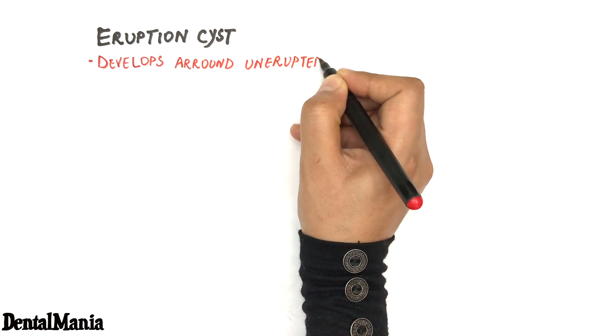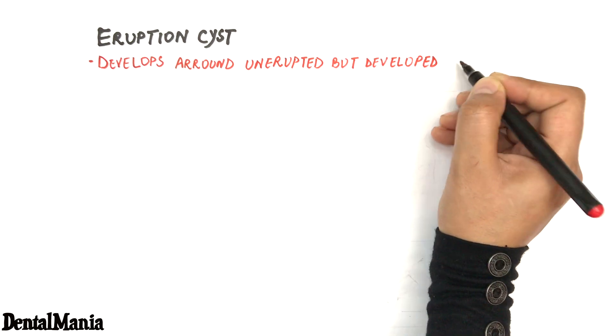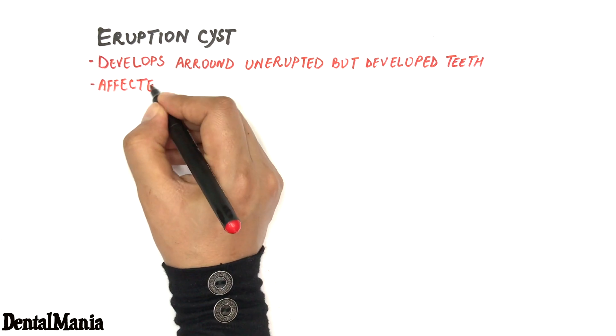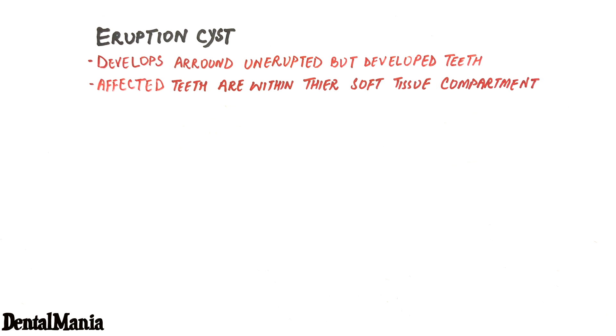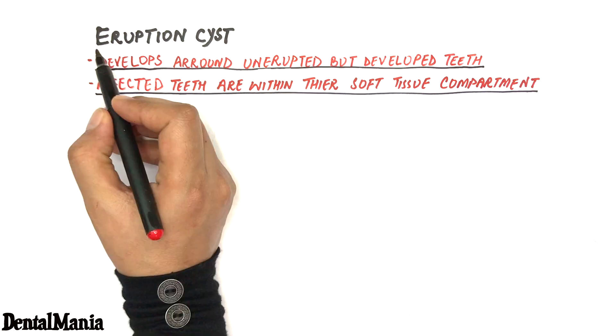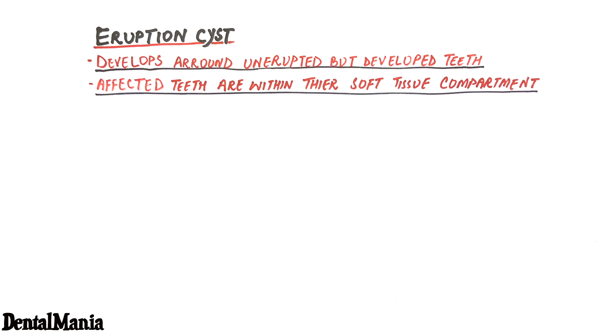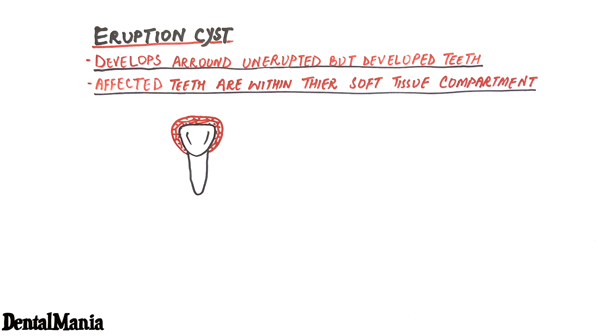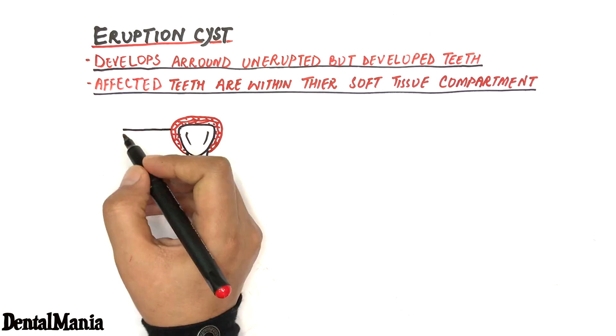Today's video is about eruption cyst. The eruption cyst is an epithelial-lined developmental odontogenic cyst that affects unerupted but developed teeth. The cyst develops around the crown of an unerupted tooth which lies out of its bony compartment yet within its soft tissue compartment of the jaws. The cyst is derived from reduced enamel epithelium, which is the epithelium that covers and protects the crown until a tooth erupts into the oral cavity.